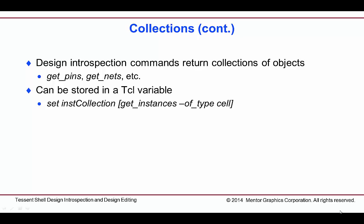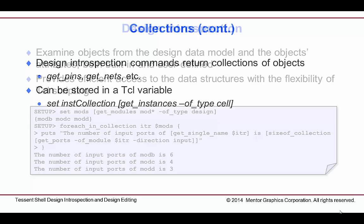We have a number of commands that get information from the design — we call this design introspection. For example, you can easily create collections of specified design objects with our GET commands, like GET PINS. Collections can also be assigned to Tcl variables as shown here.